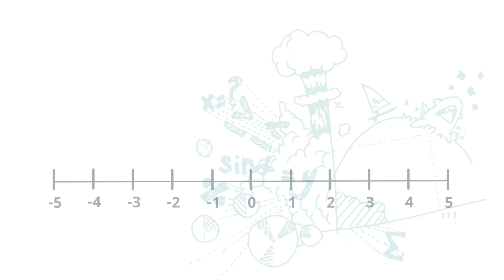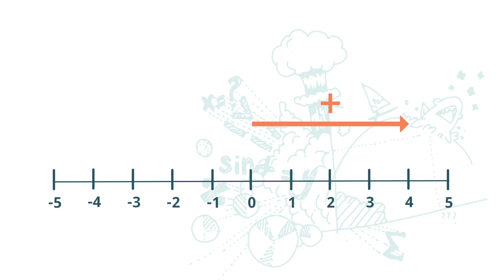When we do the addition of integers, we need to remember that when we have positive or plus signs, it's moving to the right. When we have negative or minus signs, it's moving to the left.